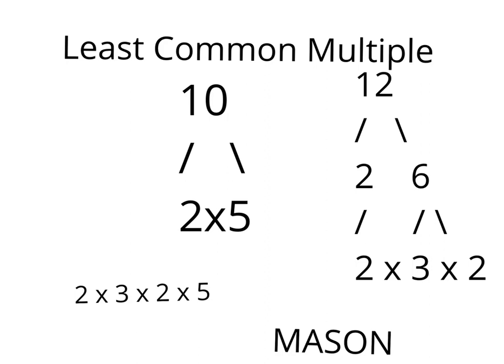Then you go 2 times 3, which equals 6, and then 3 times 2, that equals 12, and then 5 times 12 equals 60.